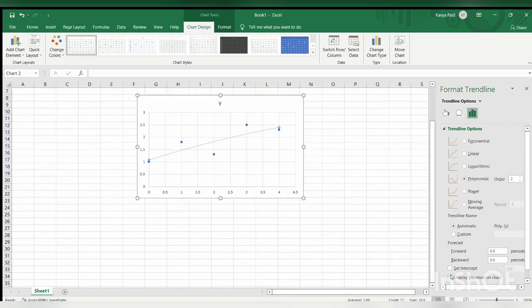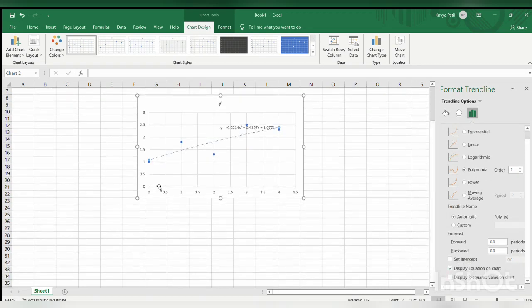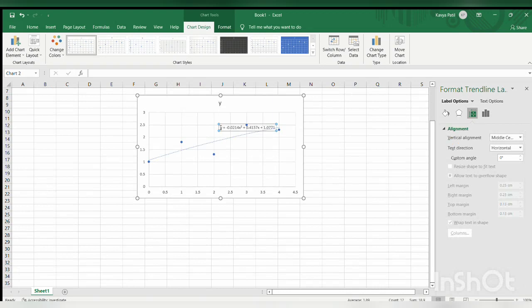Then click on display equation on chart. The equation will be displayed. Increase the size of the equation so that it becomes visible, then move it to the appropriate place.